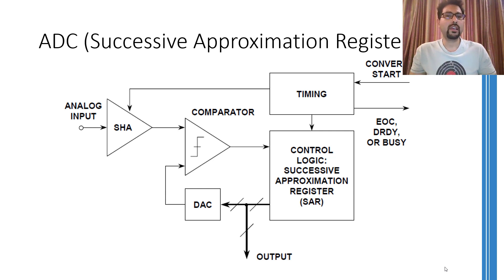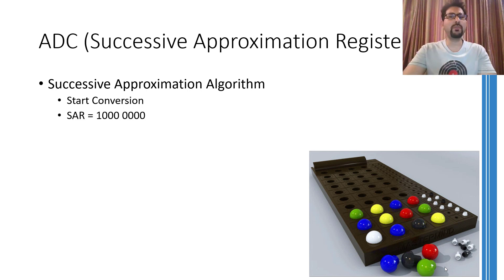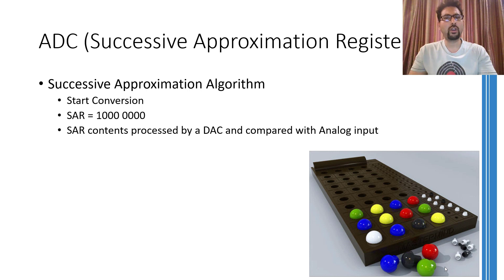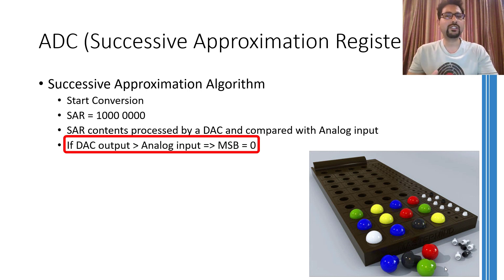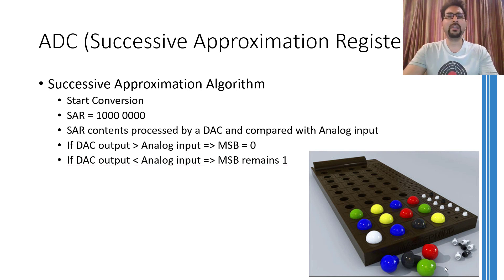So if there are four bits, you have to repeat this process at least four times. Let me list down the steps of the successive approximation algorithm more systematically. At the very start, the SAR contains the mid value — for an 8-bit ADC the mid value would be 128, or in binary 1 followed by 7 zeros. The contents of the SAR are compared with the analog input, after first being converted into the analog domain by the DAC. If the DAC output is larger than the analog input, the most significant bit is set to zero; otherwise it is retained as 1. This completes one cycle.